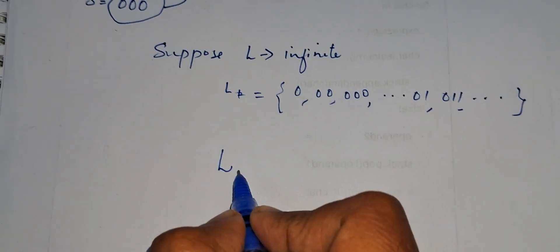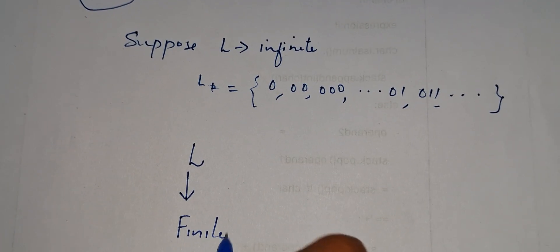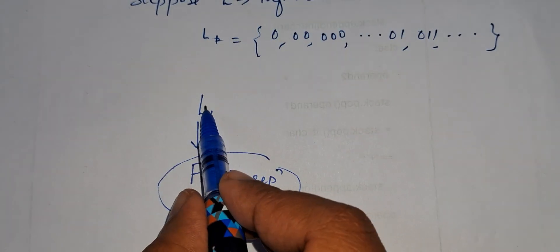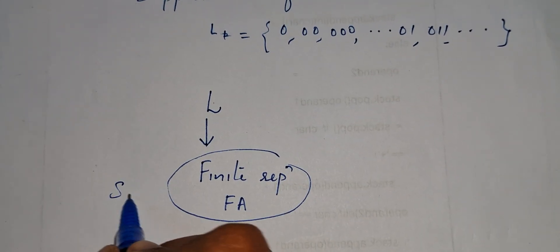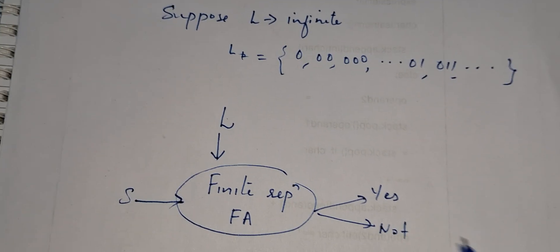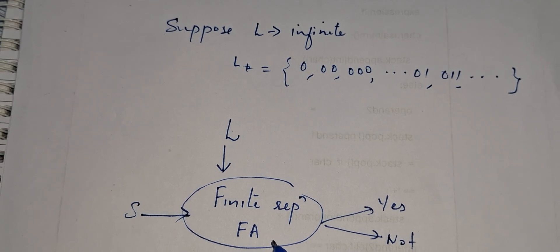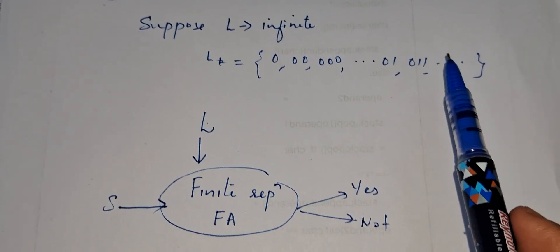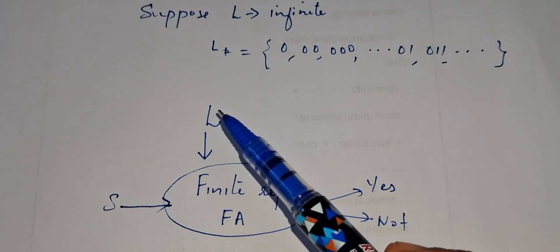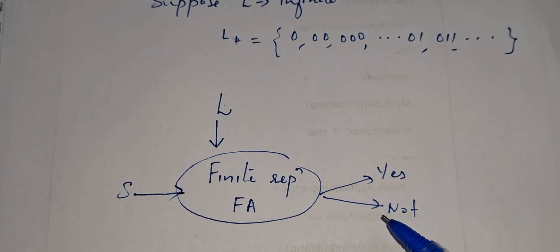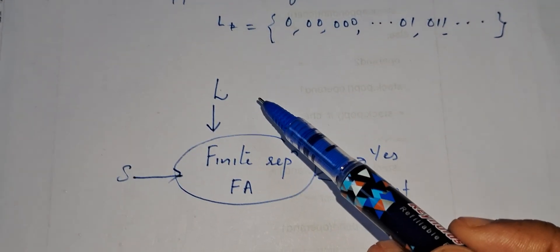So for any language there should be some finite representation, or finite automata, that can represent it in memory. Corresponding to any language we should have some finite representation — and this finite representation is our finite automata. We apply a string to this finite representation, and the automata will say whether this particular string is present or not present — either yes or no.